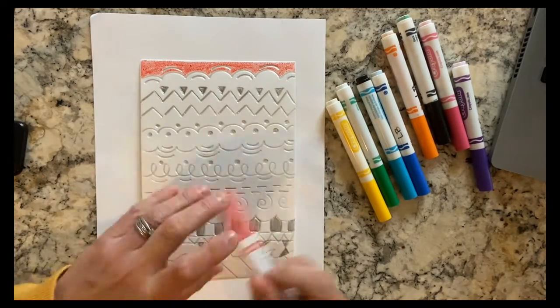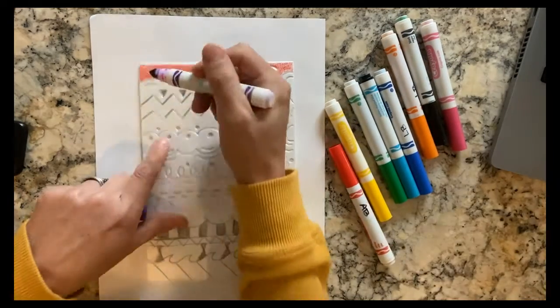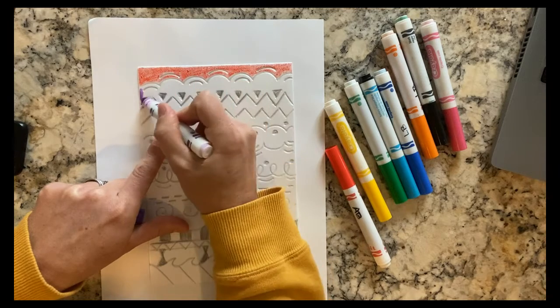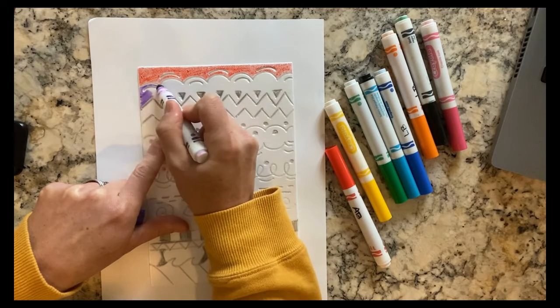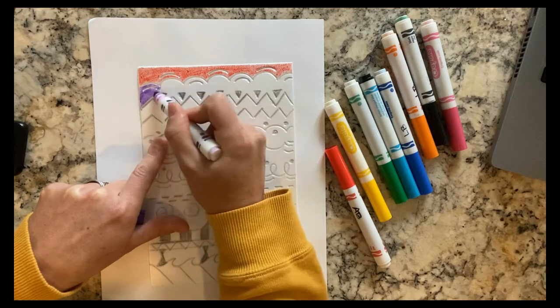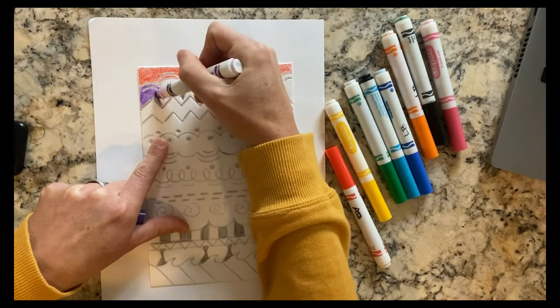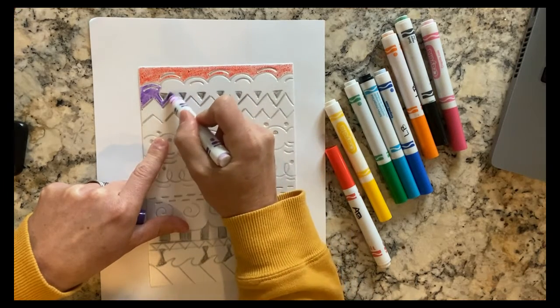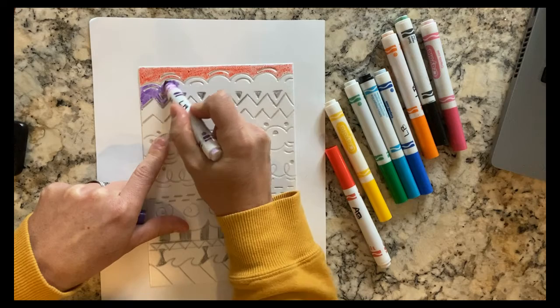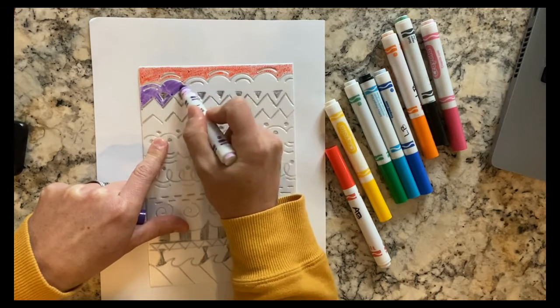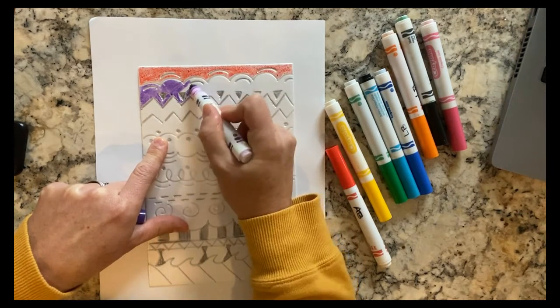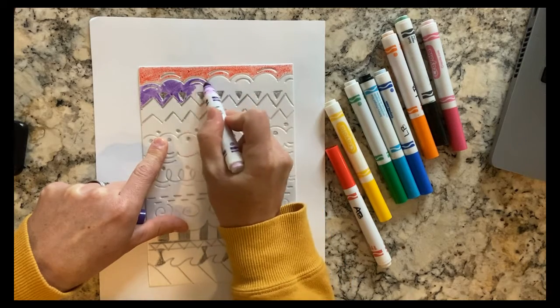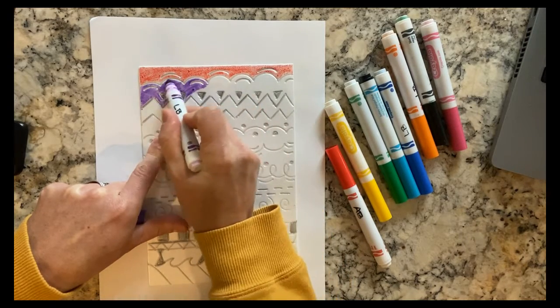I want you to think about coming up with some nice designs with your markers. So all you're going to do right now is spend some time coloring all the white areas. I'm going to continue working and I want you to spend some time working on coloring.